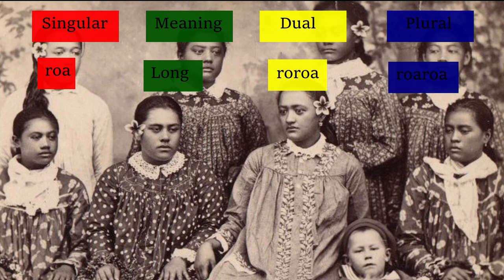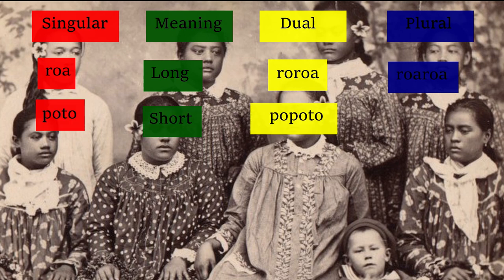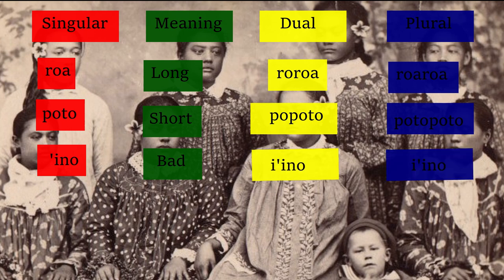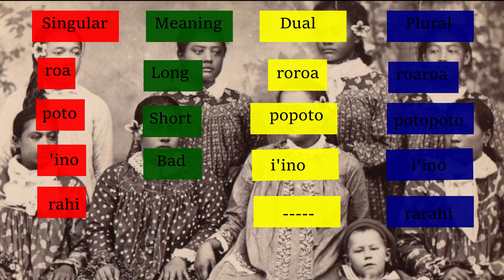Roa roa can also mean very long. Poto, meaning short, has a dual form of 'popoto' and a plural form of 'potopoto.' Ino, meaning bad, only has a form for the singular and shares the same form with the dual and the plural: ino, i-ino, and i-ino in the plural. Rahi only has a plural and a singular form: rahi for the singular, and rahi rahi for the plural, meaning a lot.